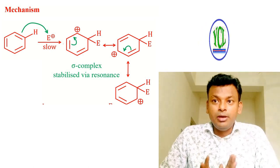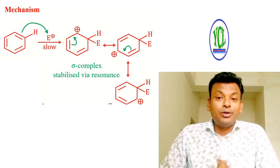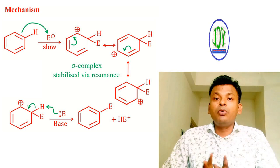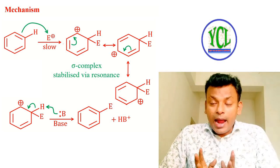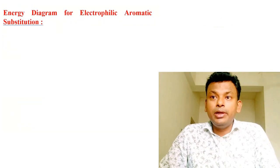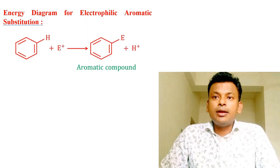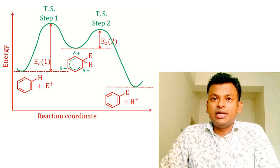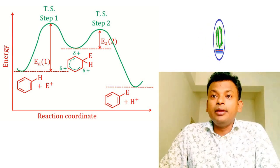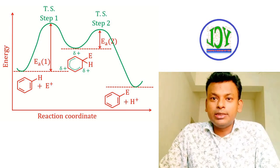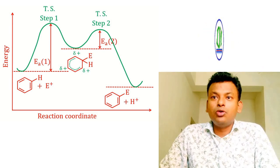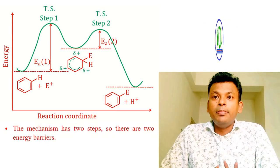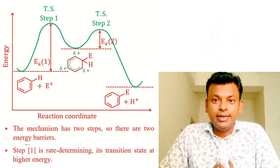In the sigma complex, aromaticity is lost because only four pi electrons are present, so it is not aromatic. In the next step, a base accepts a proton from the sigma complex and aromaticity is regained. The energy diagram for electrophilic aromatic substitution shows a two-step mechanism with two energy barriers. Step one has activation energy Ea and the intermediate is the sigma complex; step two gives the final product.